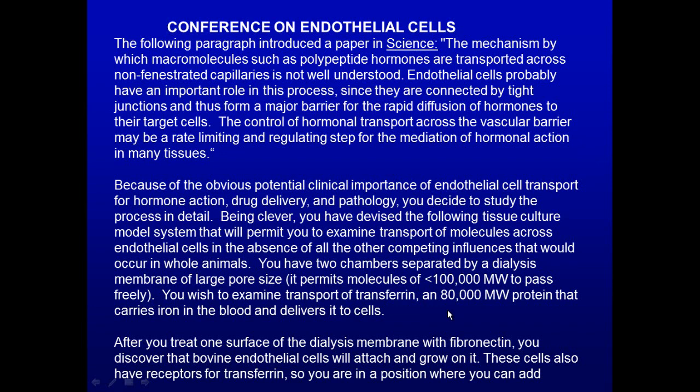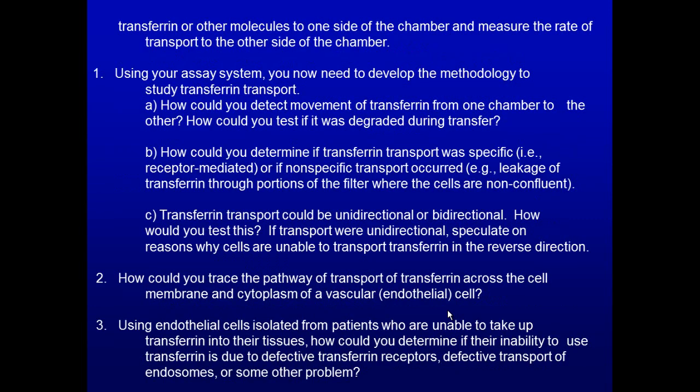You put fibronectin on the filter, then plate bovine endothelial cells on it. The fibronectin causes the cells to become polarized, establishing a basal and apical side. Using that model, you perform different experiments to determine whether transferrin appears in one chamber or the other, and whether it is degraded when transferred.